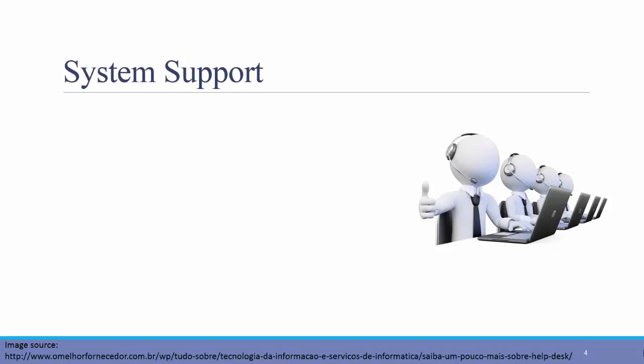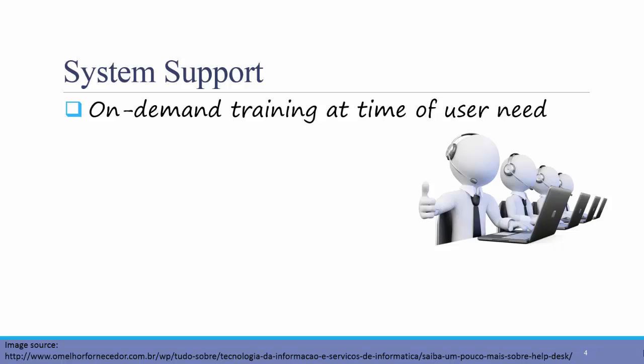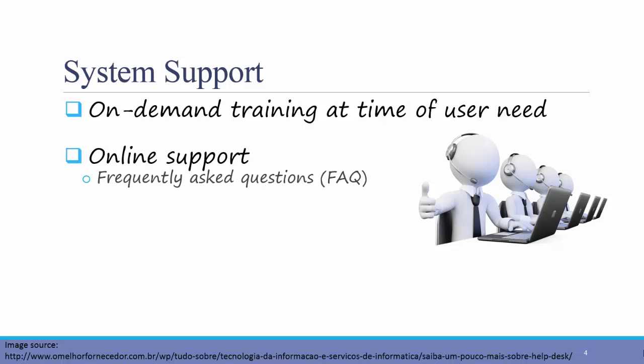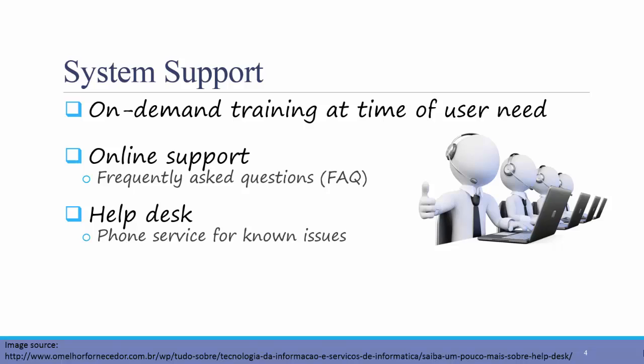First, system support. System support can include on-demand training at the time of user need. It can also include online support, such as frequently asked questions pages. Most large organizations will include help from the IT Help Desk. Usually the IT Help Desk should provide phone service for known issues, and about 80% of known issues should be able to be resolved by Level 1 support — those who answer the phones at the Help Desk.